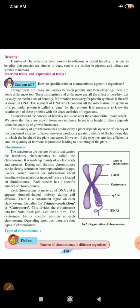It is mainly made up of nucleic acids and chromoproteins. During cell division, chromosomes can be clearly seen under the compound microscope. Genes, which contain the information about hereditary characteristics in coded form are located on chromosomes. Each species has a specific number of chromosomes. Each chromosome is made up of DNA and it appears dumbbell shaped midway during cell division. There is a constricted region in each chromosome.